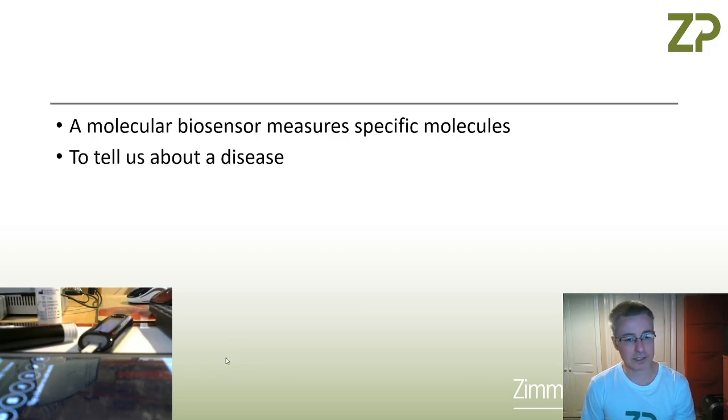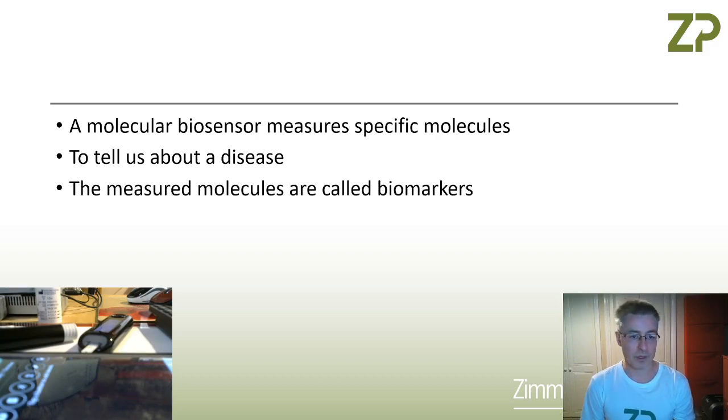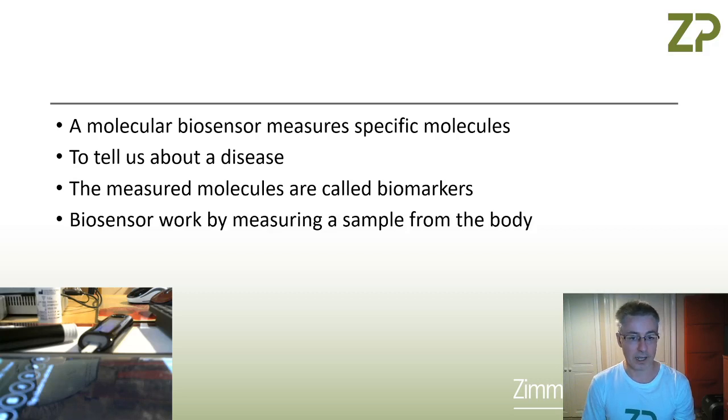By measuring glucose, it tells us something about the disease. What it's telling us is how much glucose is in my blood. The disease that we're actually interested in is diabetes, and there's two types: type 1 diabetes and type 2 diabetes. The glucose in this context is called the biomarker.